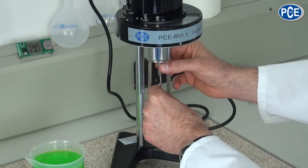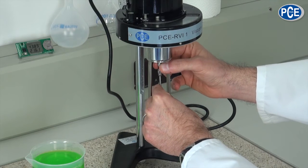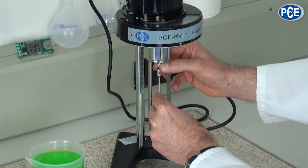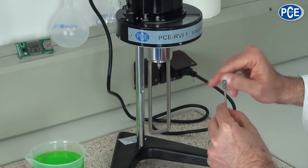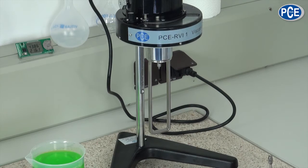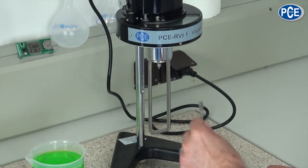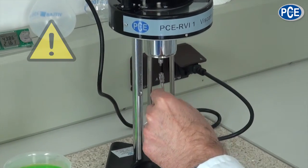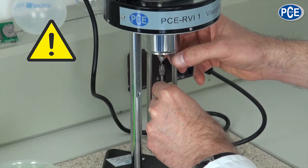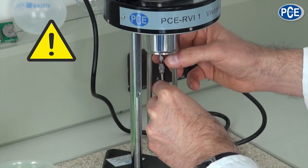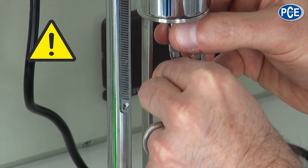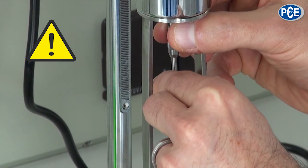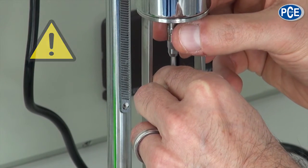The viscometer PCE RVI1 is a precision instrument. The torque is determined from a viscous liquid. The torque is measured by a hairspring inside. Especially when fixing the rotation body, watch that the mechanics are not damaged. That can be prevented when turning the body and lifting it up a bit. The rotation body is carefully screwed on its axis. So it is ensured that the mechanics aren't damaged.